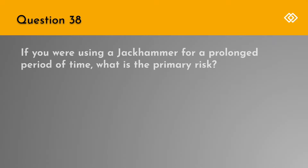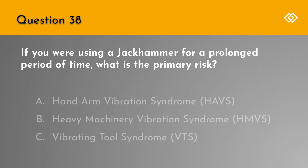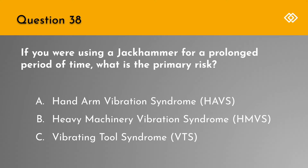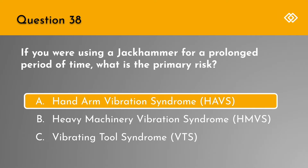Question 38. If you were using a jackhammer for a prolonged period of time, what is the primary risk? A. Hand-arm Vibration Syndrome. B. Heavy Machinery Vibration Syndrome. Or C. Vibrating Tool Syndrome. The correct answer is A. Hand-arm Vibration Syndrome.